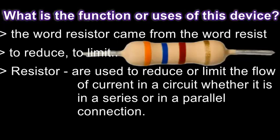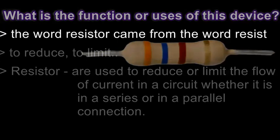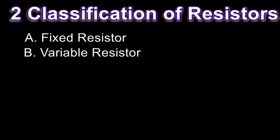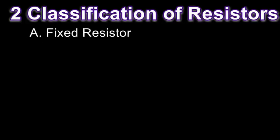Keep in mind that resistors are classified into two types. The first one is what we call fixed resistors, and the second one is variable resistors. Let us discuss the first one — fixed resistors.